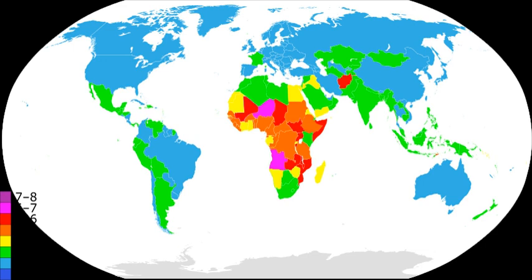Nativity in the Western world dropped during the interwar period. Swedish sociologists Alva and Gunnar Myrdal published Crisis in the Population Question in 1934, suggesting an extensive welfare state with universal healthcare and childcare to increase overall Swedish birth rates.